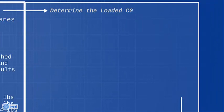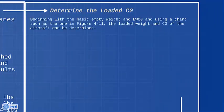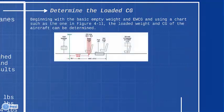Determine the loaded CG. Beginning with the basic empty weight and EWCG, and using a chart such as the one in Figure 4-11, the loaded weight and CG of the aircraft can be determined.